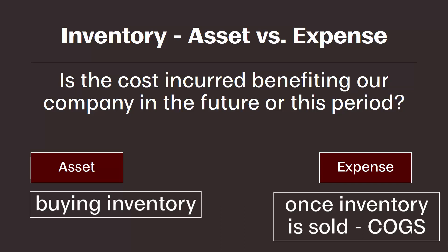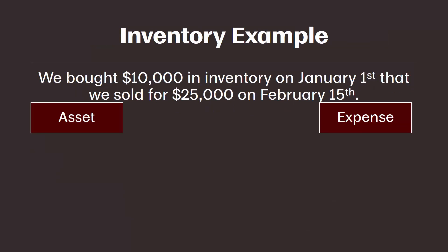When we sell that inventory, it becomes an expense associated with the cost of the inventory. We record that expense at the same time we record revenue for the inventory sold. The expense associated with inventory is called cost of goods sold. So initially the cost of that inventory goes into an asset account when we first buy it, and when we sell the inventory, that cost moves into an expense account called cost of goods sold.